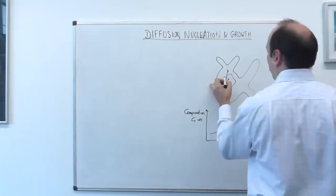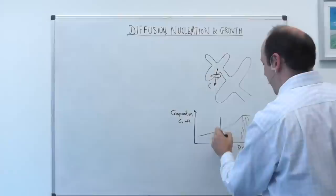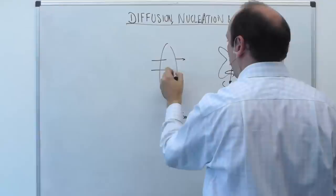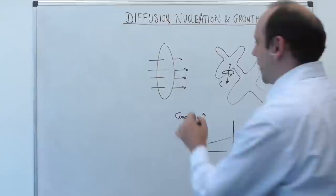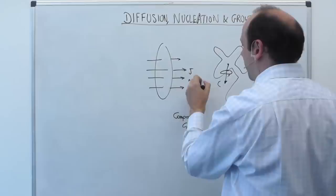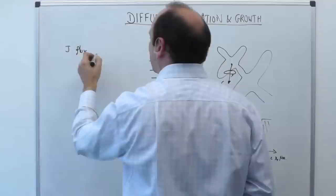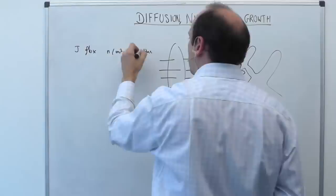If we take a control area projected into the page and ask what the flux is — the movement of atoms through that area at some position in distance — then in the middle of this composition profile, that amount we call J. That's a number of atoms per meter squared per second, and that's called a flux: the number of atoms going through this control area. J is a flux in numbers of atoms per unit area per unit time.